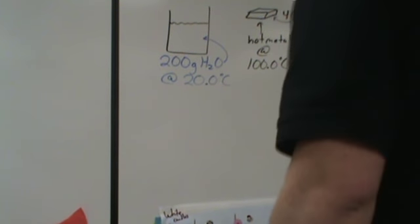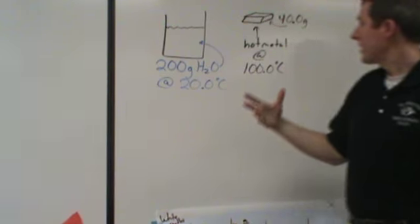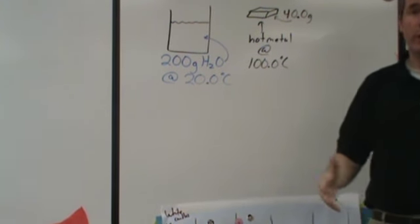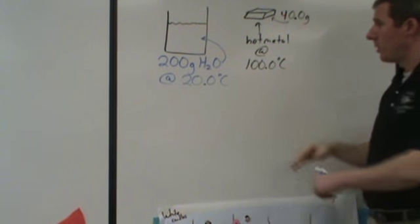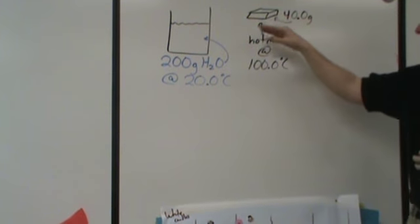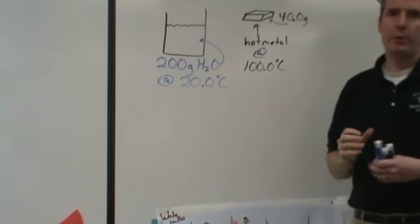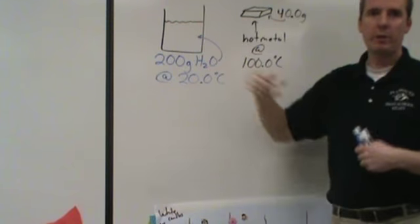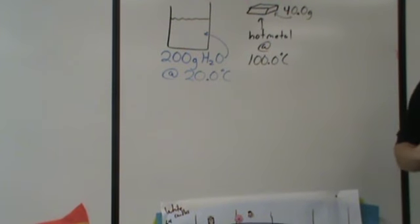So this is a calorimetry problem. The basic concept here is I have a piece of hot metal and I have a thing of cold water and I'm going to mix the two. Because they're starting at different temperatures, the collisions between the metal and the water molecules are going to end up over time resulting in the water molecules speeding up and the metal atoms slowing down.